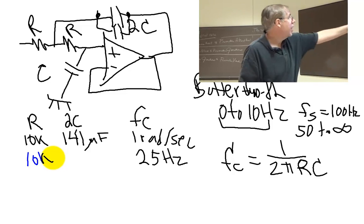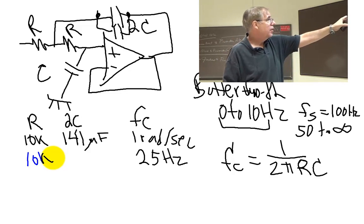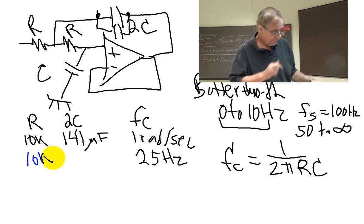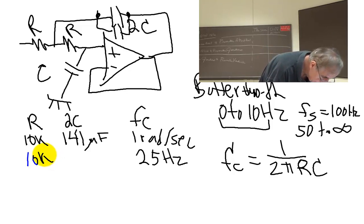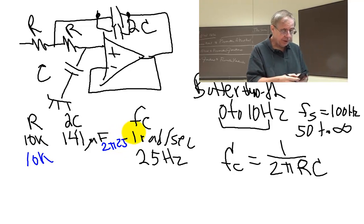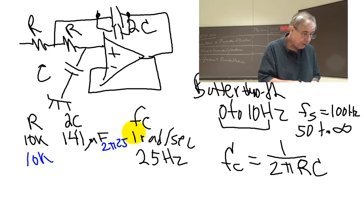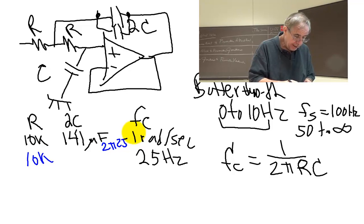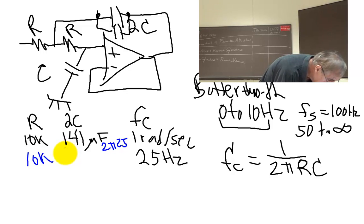So I'm going to divide the capacitors by 2π times 25. 141 divided by 2 divided by π divided by 25, and I get 0.8976.